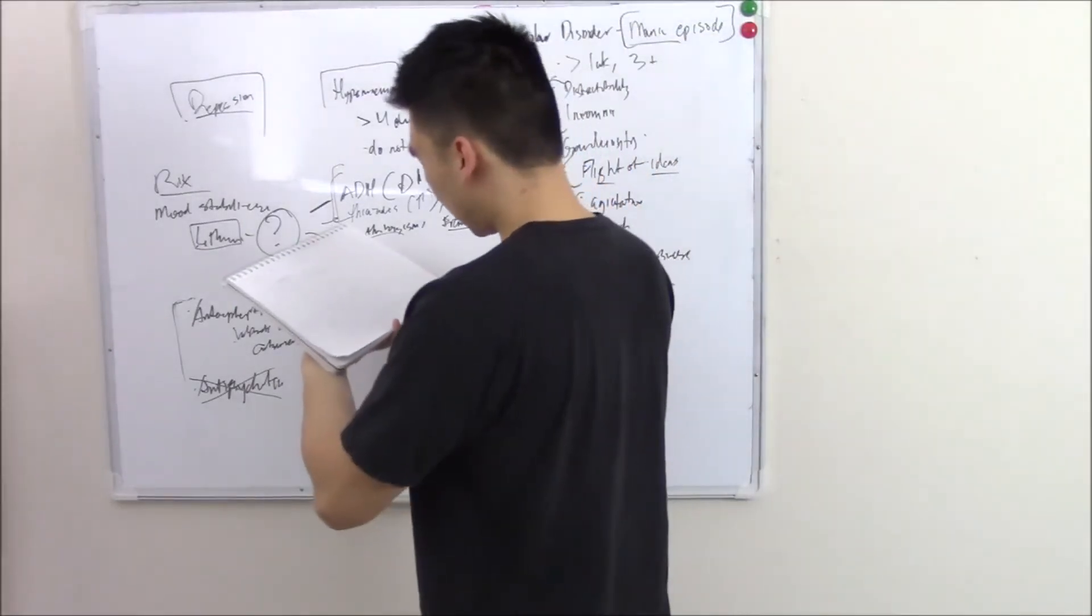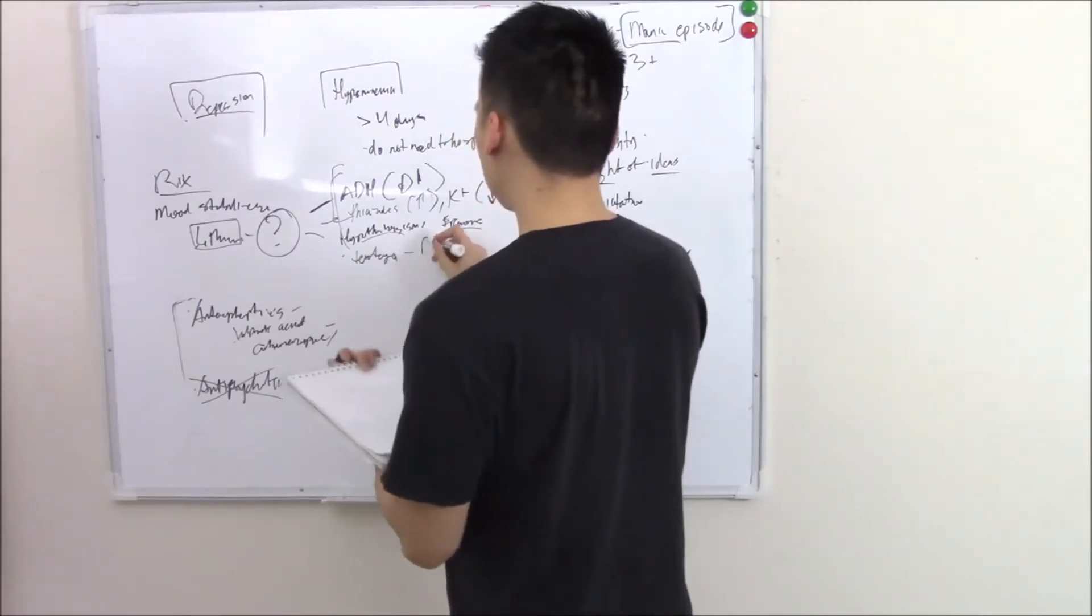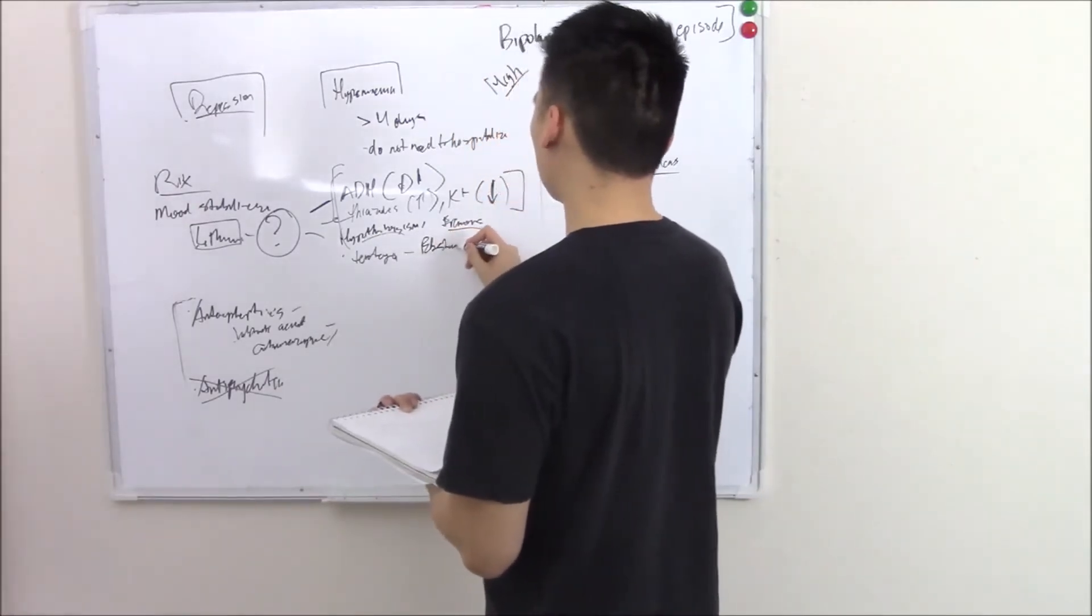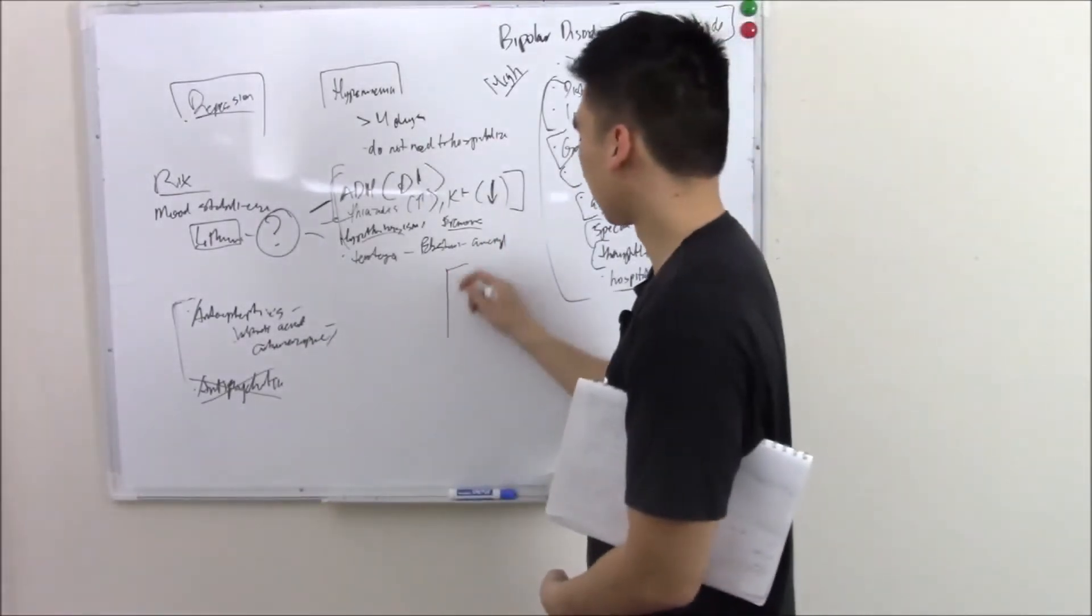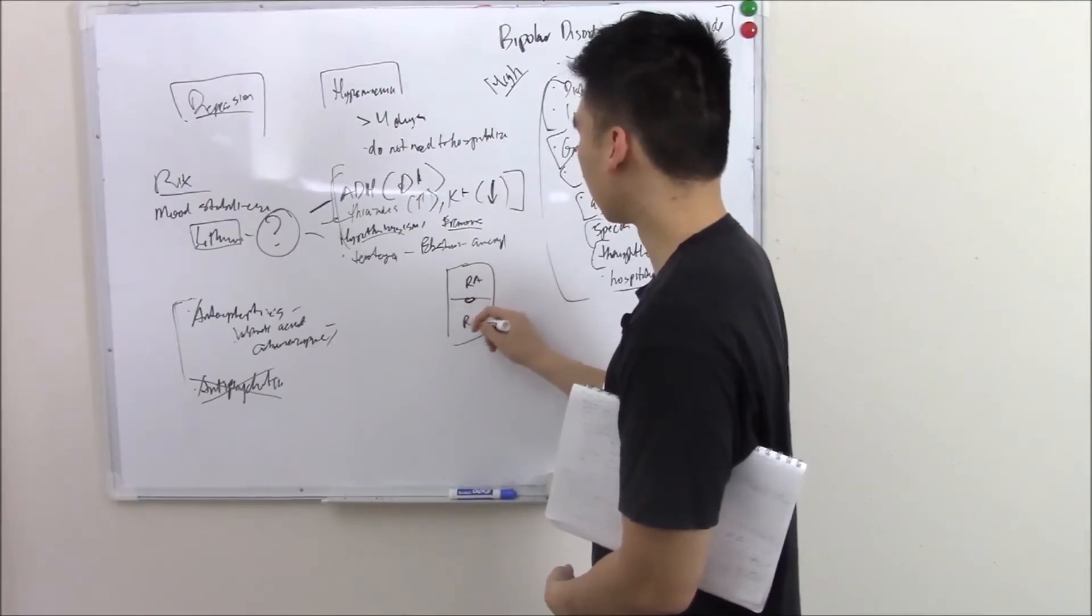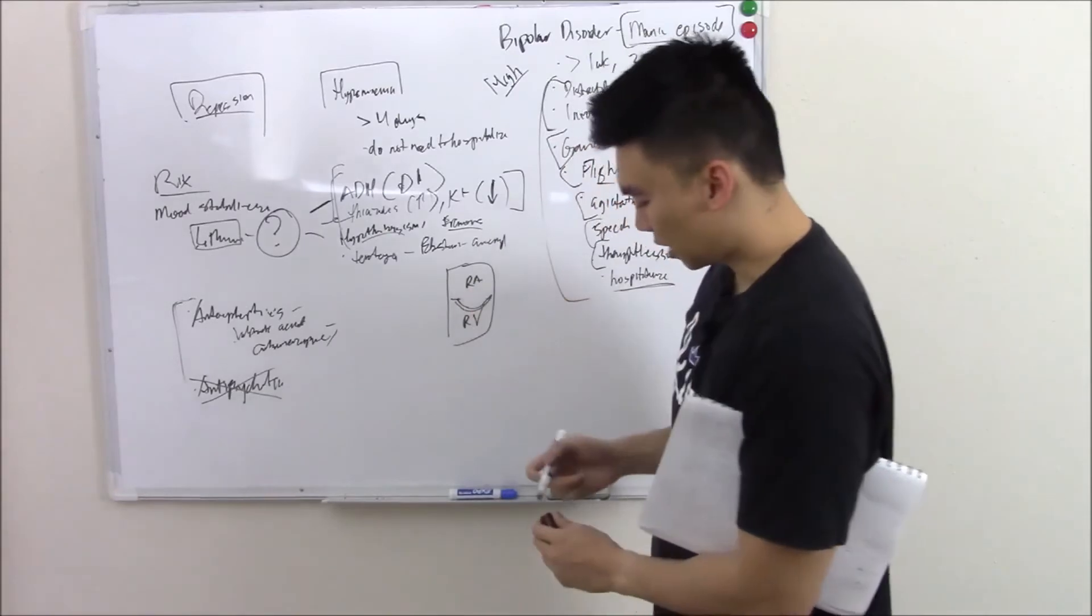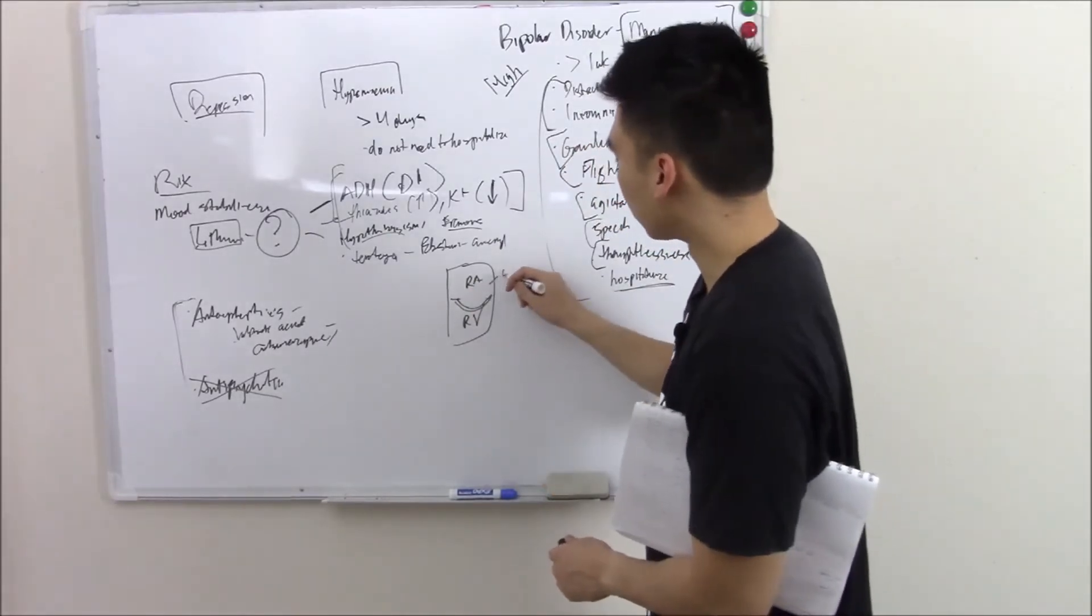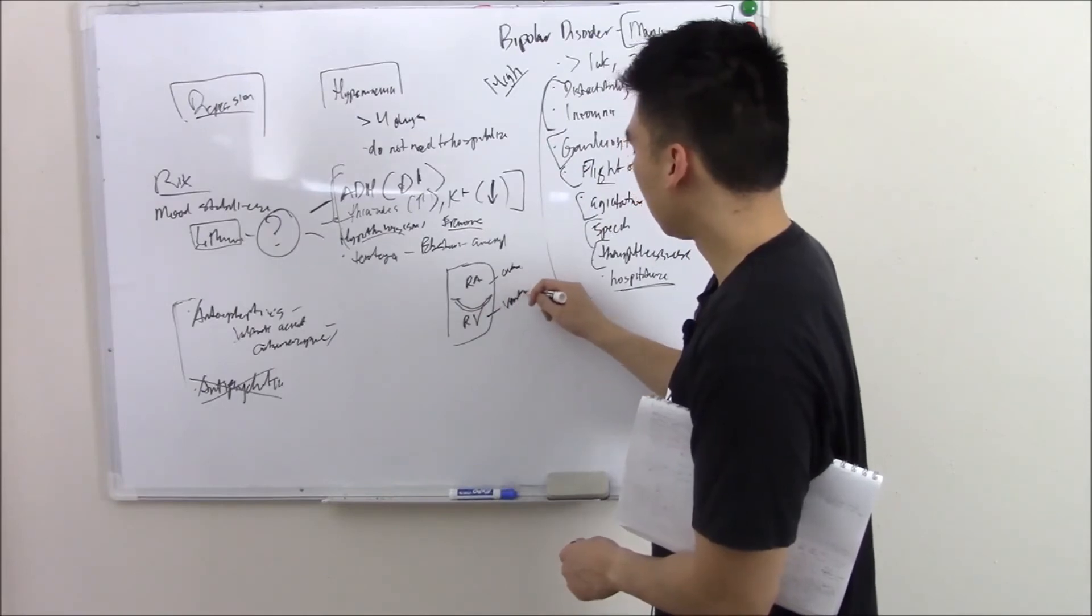And then one that you absolutely should not miss is the fact that it's a teratogen. It causes something called Epstein anomaly, where your tricuspid valve basically falls into your right ventricle. So there's your right atrium. There's your tricuspid valve. There's your right ventricle. Tricuspid valve will go like this. And that causes a very large atrium, and a very hypoplastic ventricle. And that's no good.